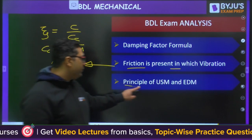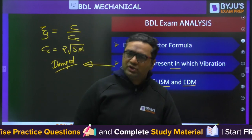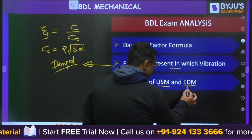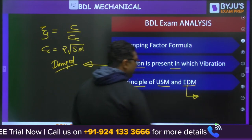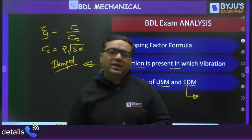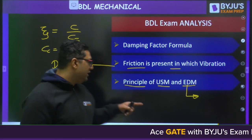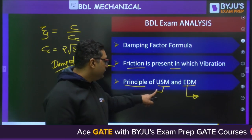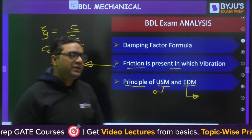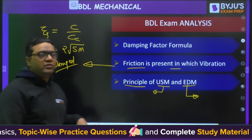A question was on the principles of ultrasonic machining (USM) and electro discharge machining (EDM) — from production, non-traditional machining methods. In EDM, it is a high voltage, low current process with an RLC circuit that works like a flywheel. In USM, the shearing mechanism removes material, and vibrations are provided to the tool using a transducer.